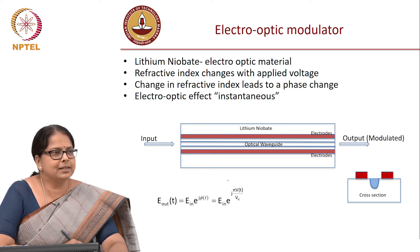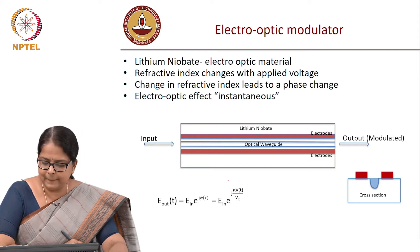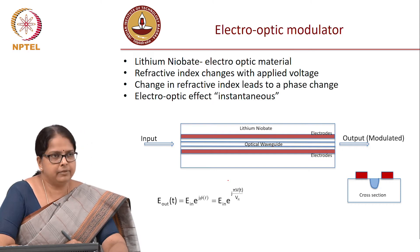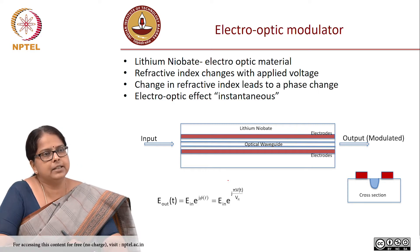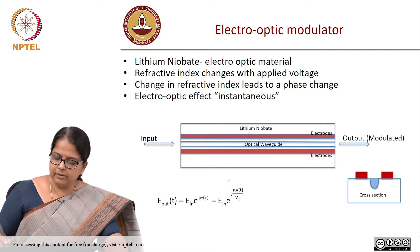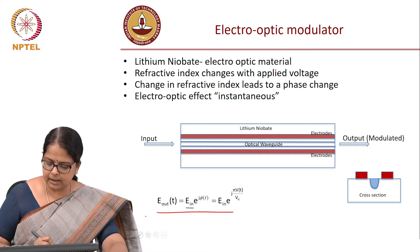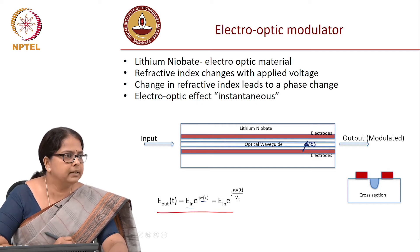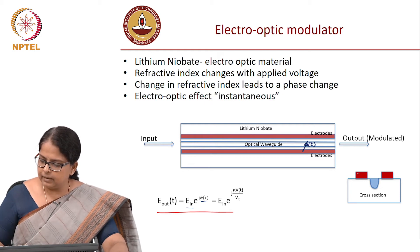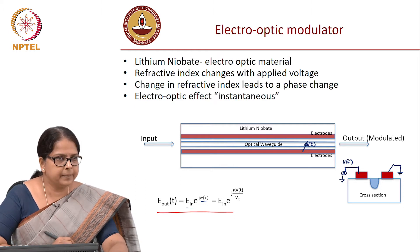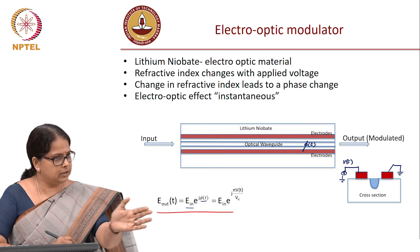Last time we discussed the phase modulator made with electro-optic material. The peculiar property of this material is that if I apply an electric field by applying a voltage, the refractive index of that material changes, and when the refractive index changes, the phase changes. So I can modulate the phase at the input. The output is E_in times e^{j phi(t)}, where phi(t) is the phase introduced by the applied field, which can be an AC voltage V(t).